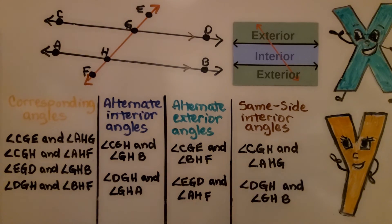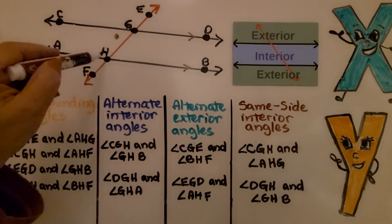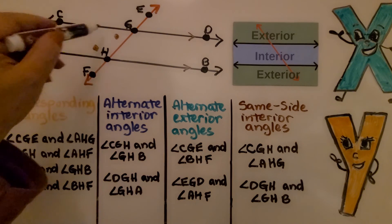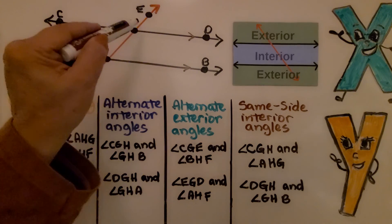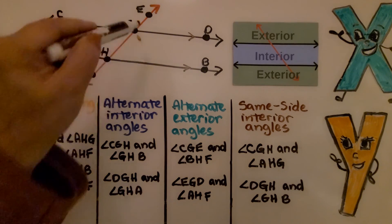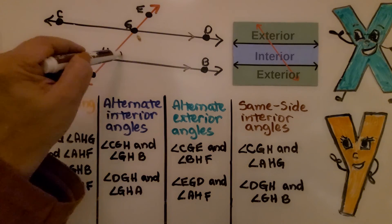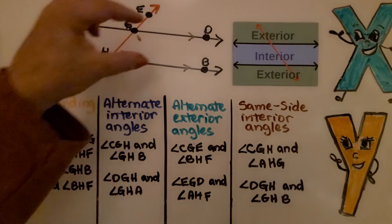For same side interior angles, we have angle CGH and angle AHG — on the same side of the transversal in the interior. Our other same side interior angles are angle DGH and angle GHB — they're both on the right side of the transversal and they're in the interior.